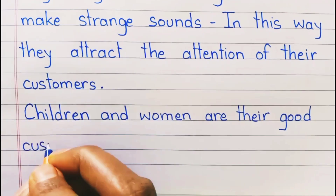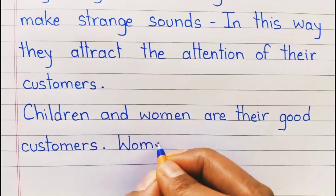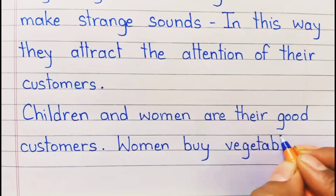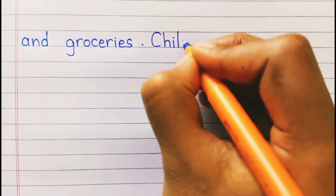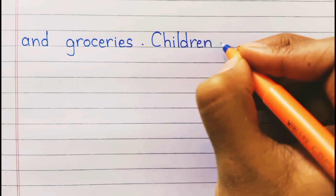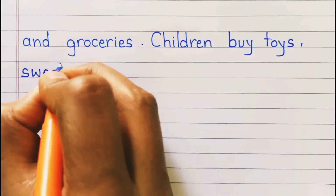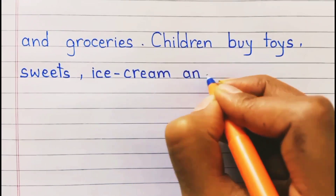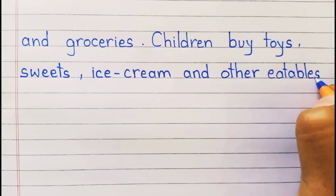Children and women are their good customers. Women buy vegetables and groceries. Children buy toys, sweets, ice cream and other eatables.